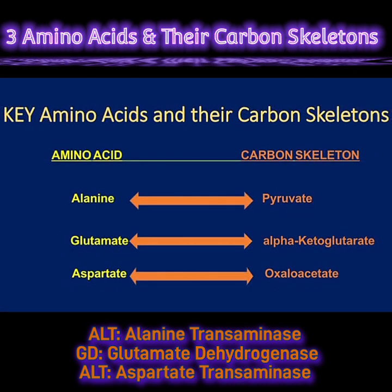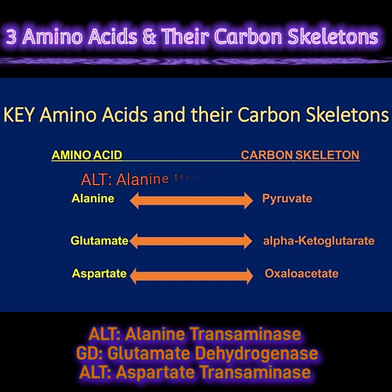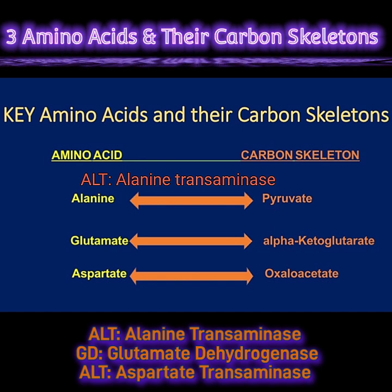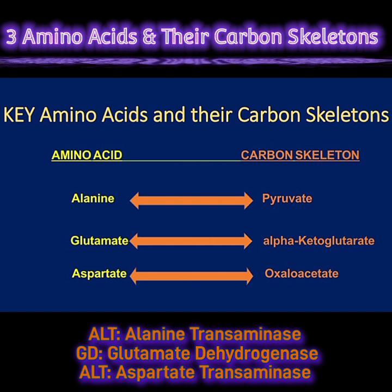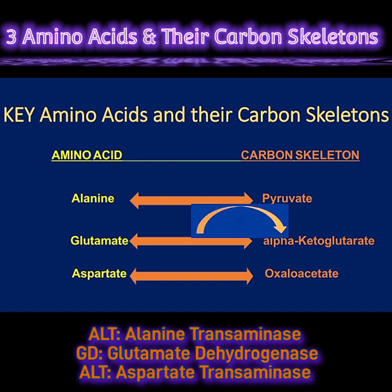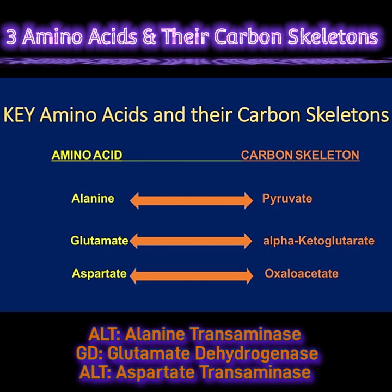The first amino acid is alanine, and it can be metabolized by alanine transaminase, or alanine aminotransferase, to form the carbon skeleton pyruvate. The ALT reaction simply takes the amine group from alanine, transfers it to alpha-ketoglutarate, and converts alpha-ketoglutarate to glutamate. What is left of alanine is the carbon skeleton pyruvate.